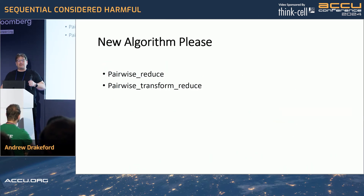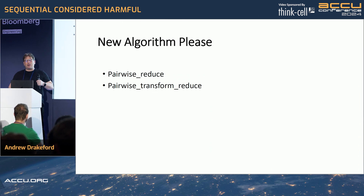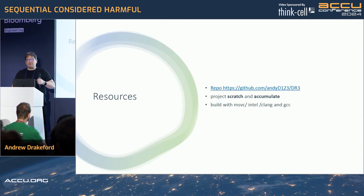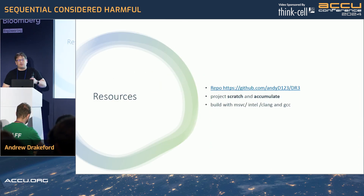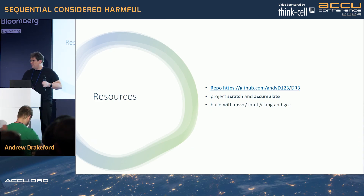Could we please have a new algorithm for pairwise reduce or pairwise transform reduce? Resources are available on the GitHub. Thank you.